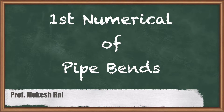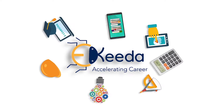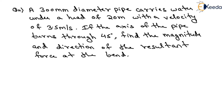Hello students. Today we are going to solve the first numerical on pipe bends. The question is: a 300 mm diameter pipe carries water under a head of 20 meters with a velocity of 3.5 meters per second. If the axis of the pipe turns through 45 degrees, find the magnitude and direction of the resultant force at the bend.